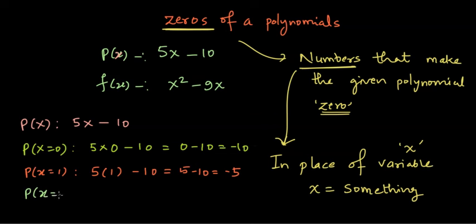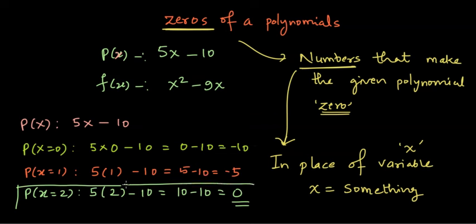What about x equal to 2? 5 times 2 minus 10, this gives me 10 minus 10 and that is zero. And we have got something that we wanted after 3 tries, which is lucky I guess. But x equal to 2 then can be called as a zero of the polynomial P(x).